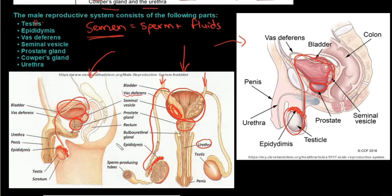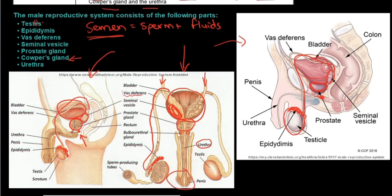The last gland is the Cowper's gland (also called the bulbourethral gland, but know it as Cowper's gland). It is tiny and sits right below the prostate gland. It secretes a fluid that helps sperm with motility, clears the urethra of urine before sperm move through, and lubricates the head of the penis for copulation. Lastly, the urethra is the long tube that transports both urine and sperm.